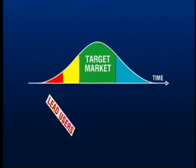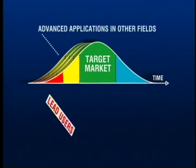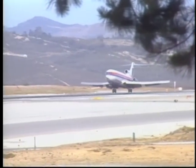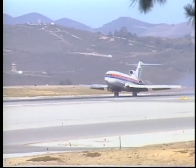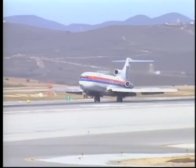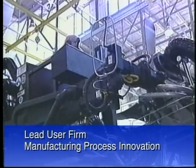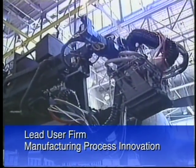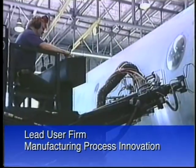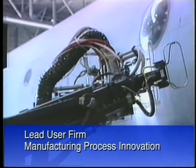Lead users can be at the leading edge of your target market, or they may be found in other applications altogether that are ahead of all the lead users in your target market. For example, lead users of braking applications in aerospace are ahead of even lead users in the automotive field, so automotive firms often find innovations in that advanced application. Lead users can be firms, they can be organizations, they can be individuals. They are users simply because they develop a solution in order to use it rather than to sell it.